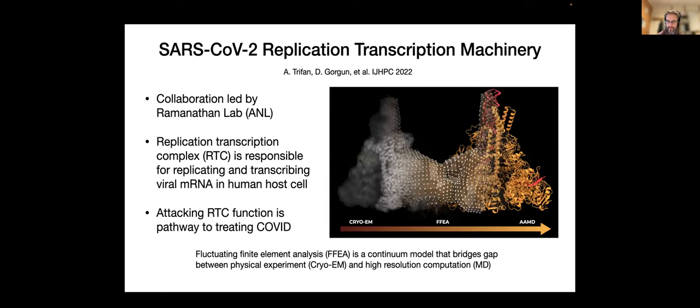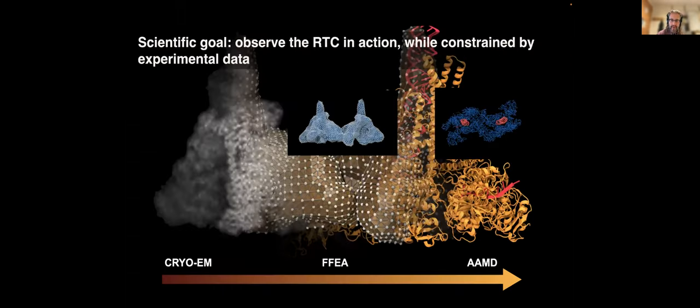And so the first project I'd like to highlight was a Gordon Bell finalist in 2021 with Andre Triffin, Defne Gorgon, and the PI on this was Arvind Ramanathan from Argonne. And this was an interesting study about the replication transcription complex that is responsible for replicating and transcribing the viral mRNA inside a human cell.